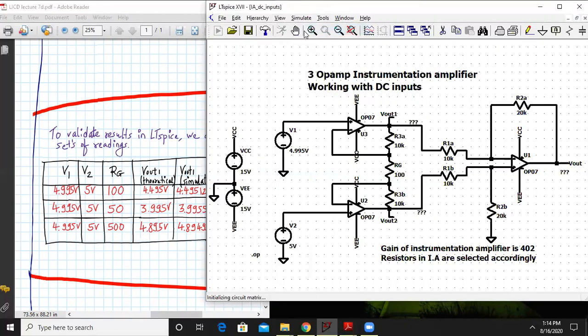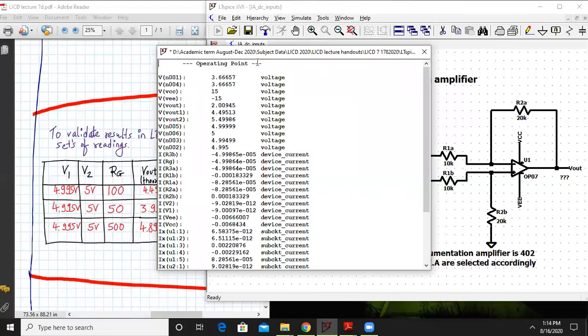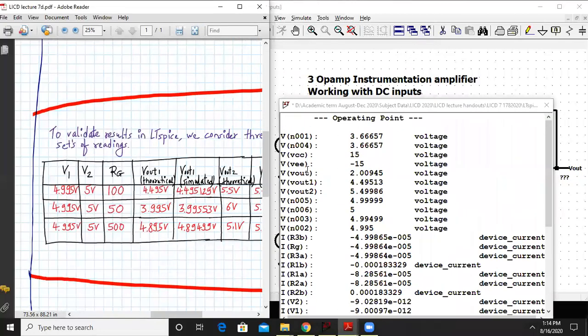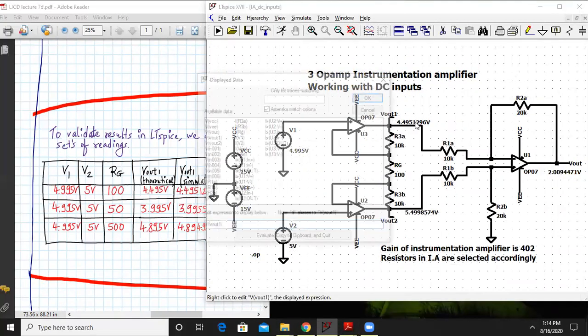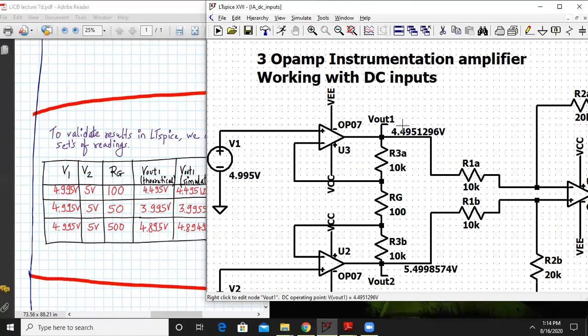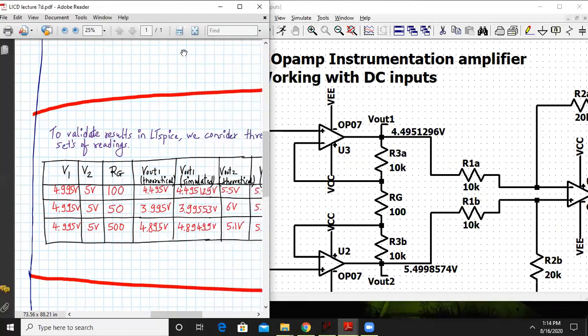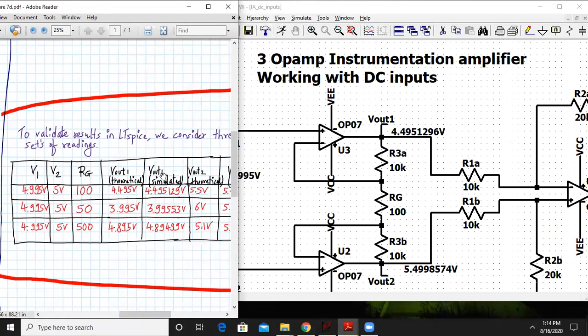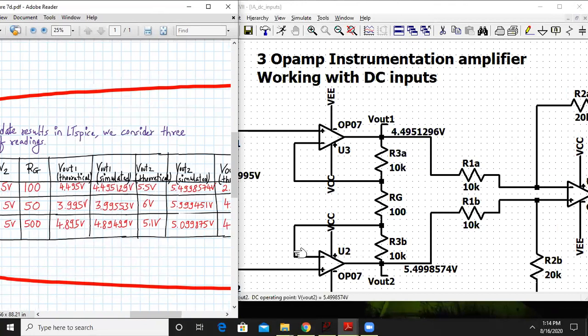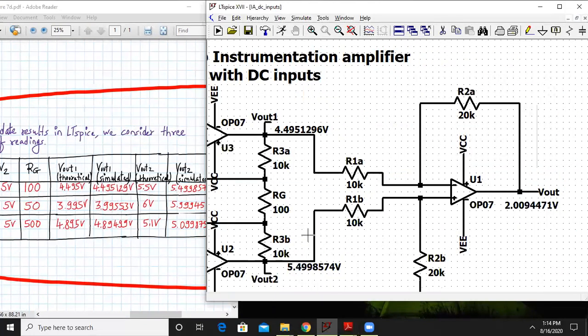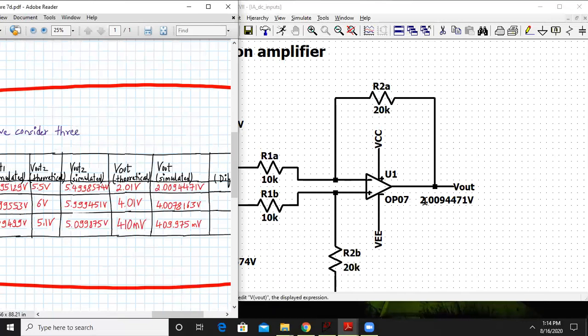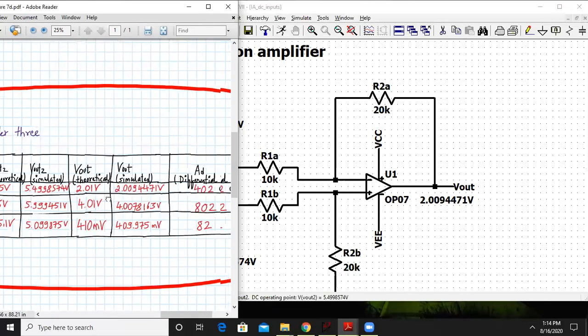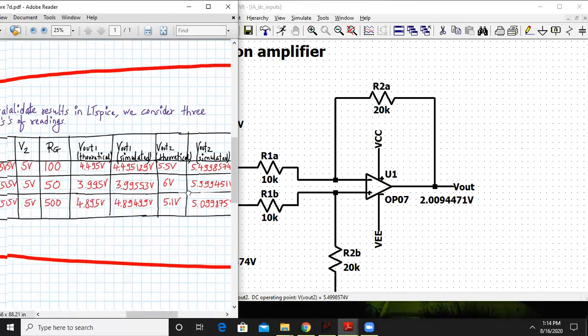Go to simulate, click on run and all the values have been set. Here we have the values of Vout1 and Vout2. Vout1 is coming out to be 4.49512 and theoretically we're getting similar value. Vout2 is 5.5 theoretically and simulated we are getting 5.499, quite close. And overall Vout as per theory is 2.01 and in simulated value we are getting 2.0094. So quite the same values in theoretical and simulated.